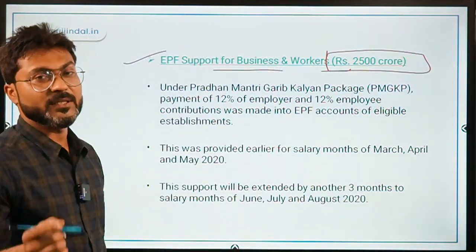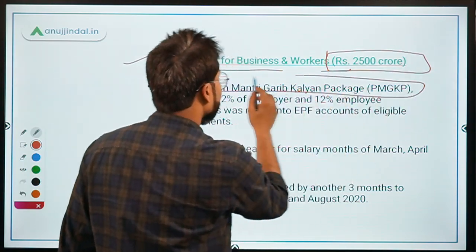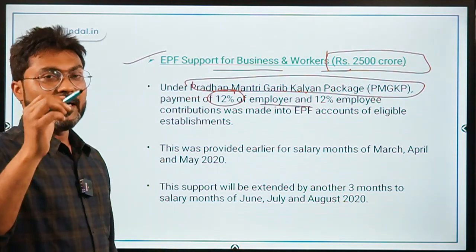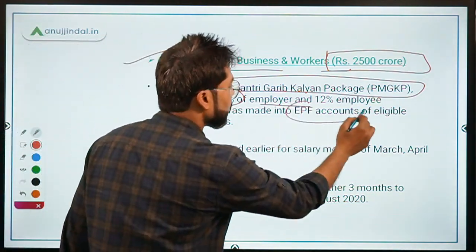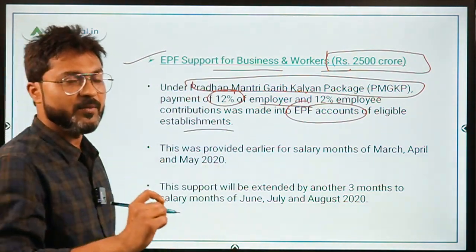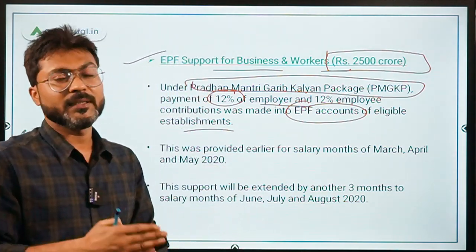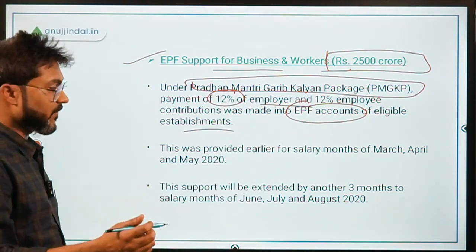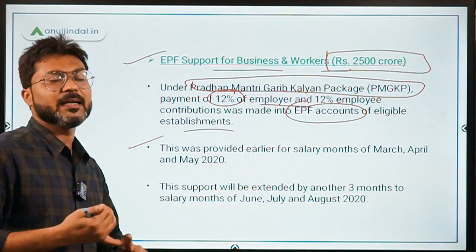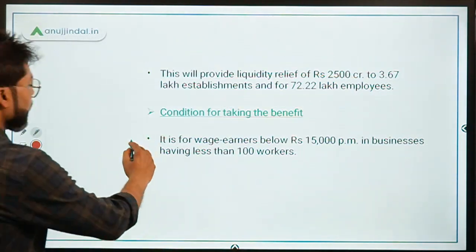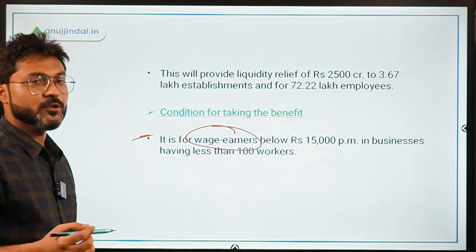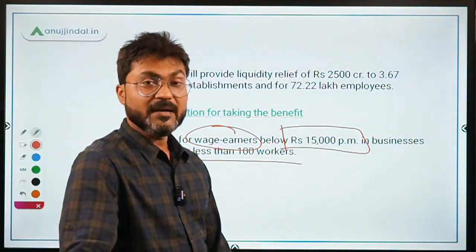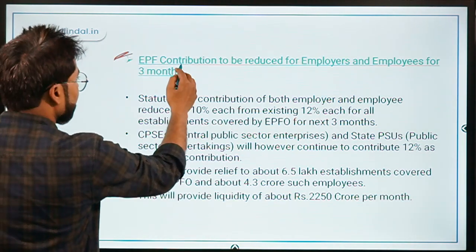Under the Pradhan Mantri Garib Kalyan Package, the government provided 12% of the employer's contribution and 12% of the employee's contribution into EPF accounts of eligible establishments up to August 2020. This scheme was for wage earners with salary less than ₹15,000 per month working in businesses with less than 100 workers.